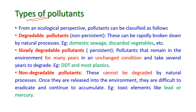Types of pollutants: from an ecological perspective, pollutants can be classified as follows. The first one — degradable pollutants — are non-persistent pollutants. These degradable pollutants can be rapidly broken down by natural processes. For example, domestic sewage and discarded vegetables which can be easily degraded by natural processes.